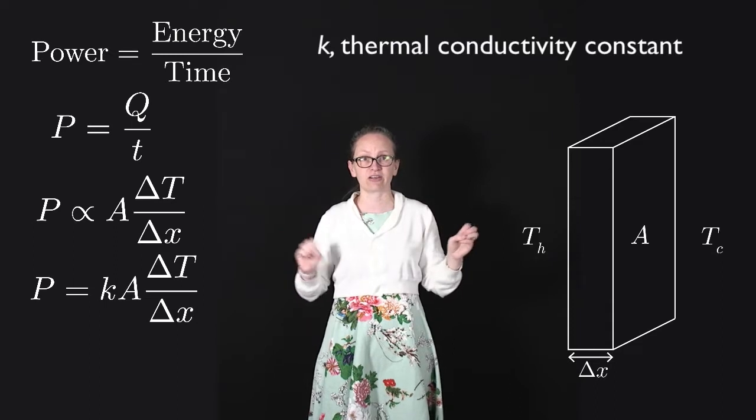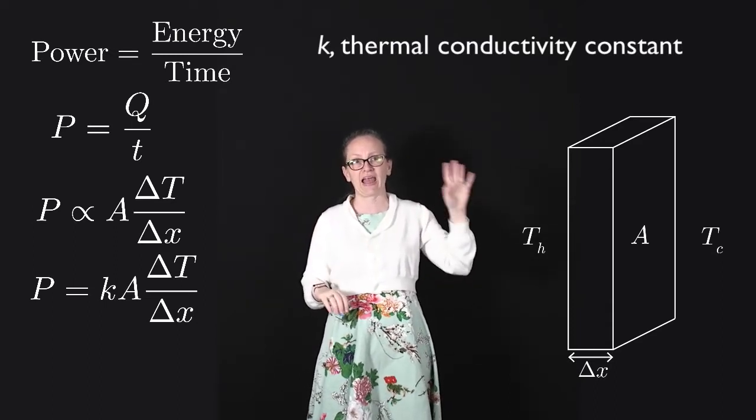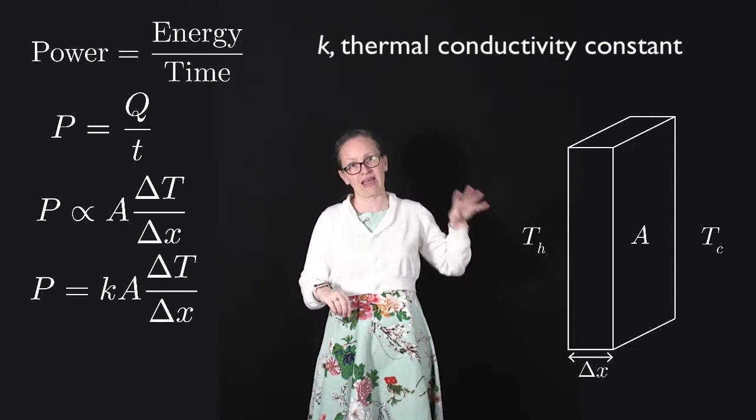K in this case is known as the thermal conductivity constant. So we can write this as equal to K A delta T divided by delta x.